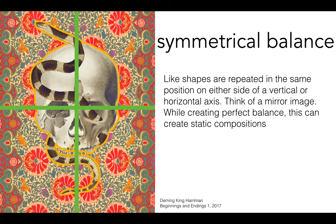The first type of balance we're going to talk about is symmetrical balance. Symmetrical balance is achieved when like shapes are repeated in the same position on either side of a vertical or horizontal axis. In this example you can see I've taken a green line to show where the axis is. If you fold it along a vertical line, either side will line up. If we fold it along a horizontal line, either side will almost exactly line up.